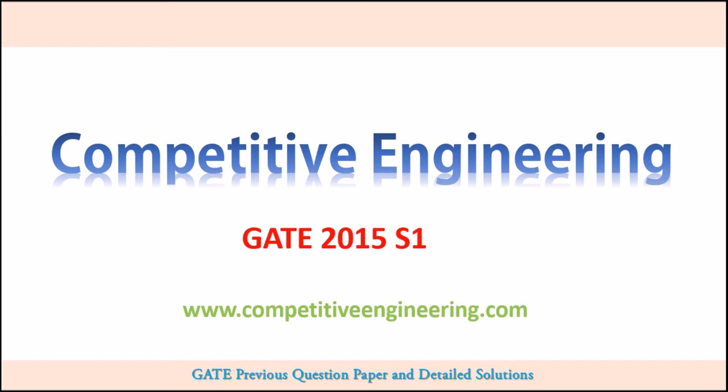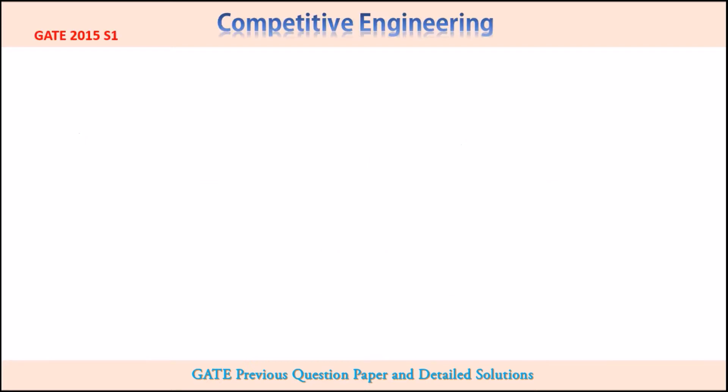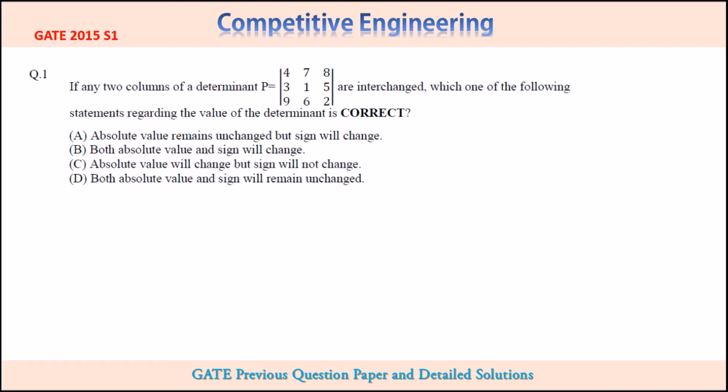In this lecture, I am going to cover the 2015 question paper of GATE mechanical engineering session 1. This lecture is prepared by Competitive Engineering. The first question was: if any two columns of a determinant P equals [4 7 8; 3 1 5; 9 6 2] are interchanged, which one of the following statements regarding the value of the determinant is correct?